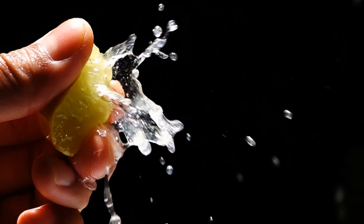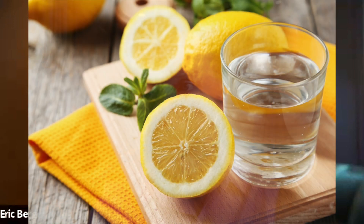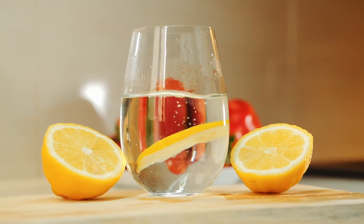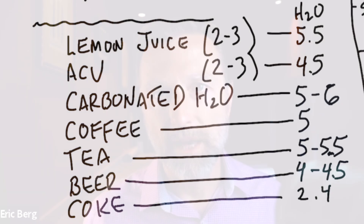Lemon juice has a pH between 2 and 3, so it's very, very acidic. But typically when you drink lemon water, you're putting a small amount of lemon juice into water — about a tablespoon — not bathing your mouth with lemons. When you combine the water plus the lemon, the pH actually rises to roughly about 5.5.